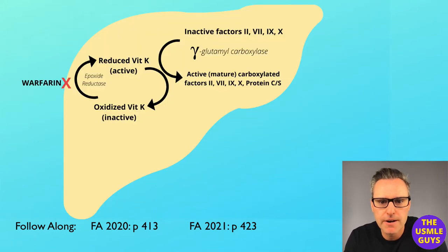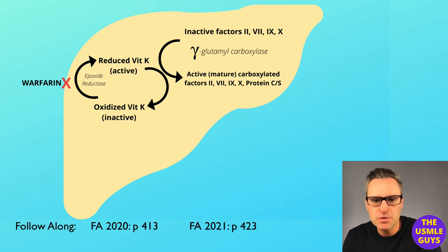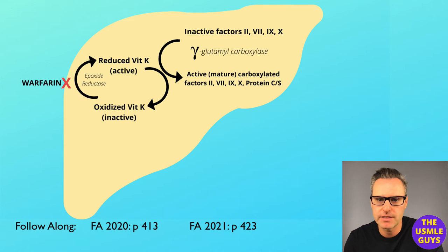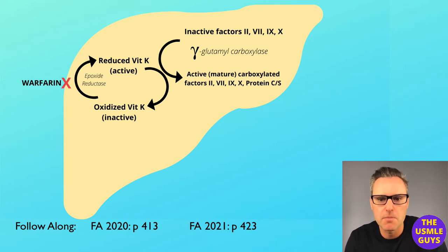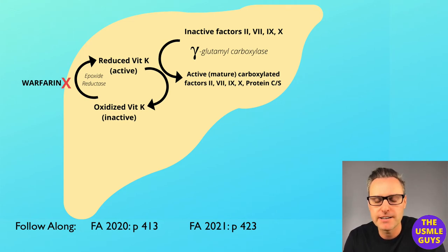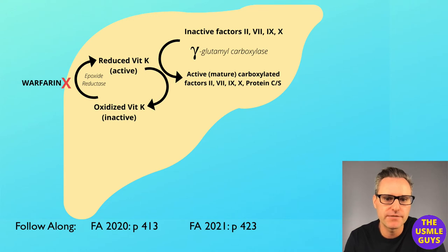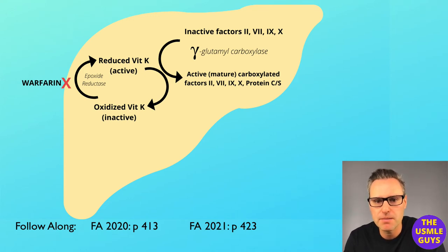If you look at the image, all you see is that we have the oxidized vitamin K, which is inactive. Epoxide reductase reduces it, making it active. Then the inactive factors, through the help of glutamyl carboxylase, will turn into active, mature carboxylated factors 2, 7, 9, 10, and protein C and S. And you can see where warfarin would exert its effects — blocking the epoxide reductase enzyme.